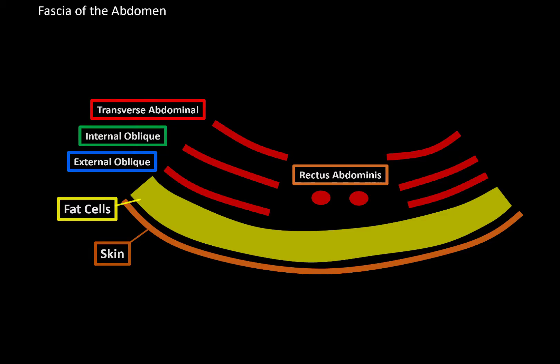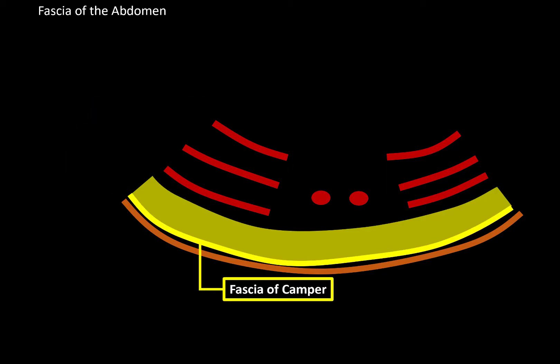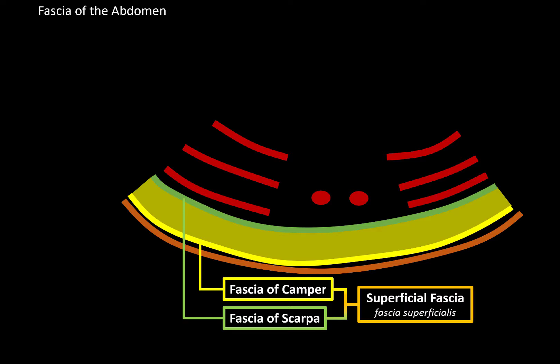The first fascia we're going to go through is associated with the fat layer. The fascia that covers the fat layer from the superficial side is called the fascia of Camper, and the fascia that covers it from the inner side is called the fascia of Scarpa. These two layers of fascia together form the so-called superficial fascia. That's the first one in our list.